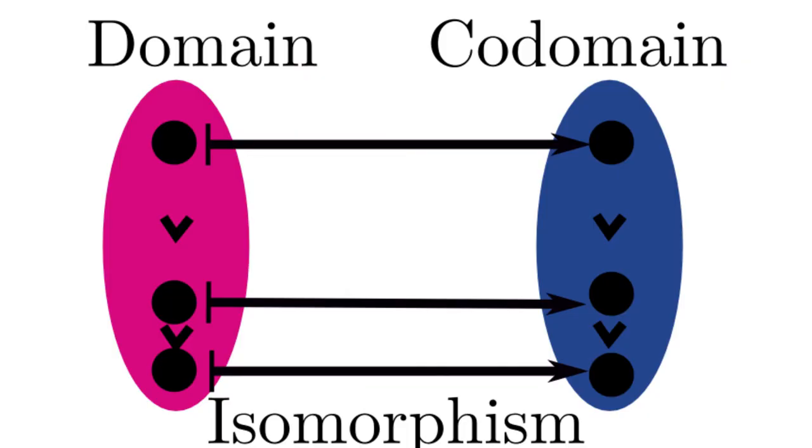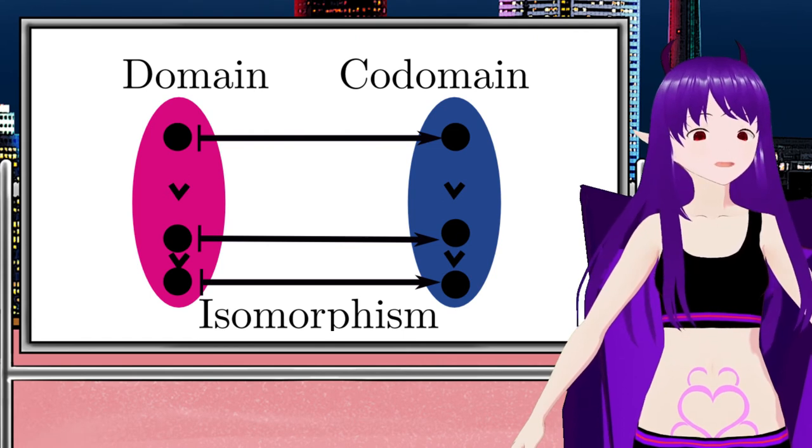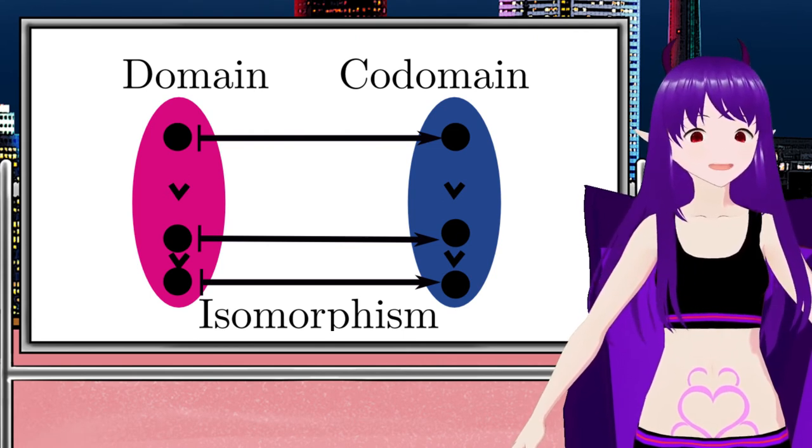When a function is both bijective and a morphism, then it is called an isomorphism. Isomorphisms are incredibly useful.